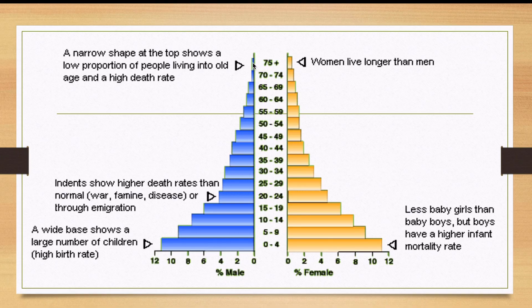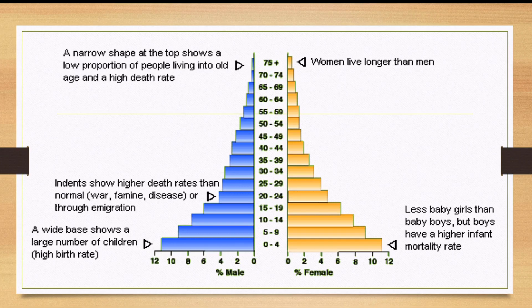Moving up to the apex of the pyramid where older people are found, the narrow shape at the top shows a low proportion of people living into old age and a high death rate. Statistically, research has shown that women live longer than men, due to socioeconomic factors as well as biological factors.